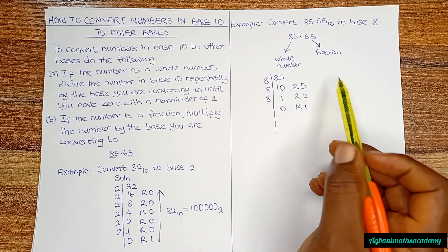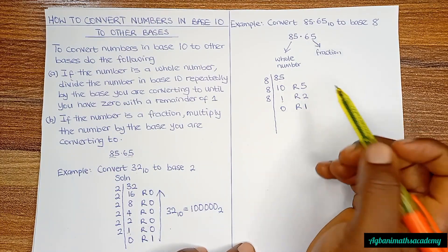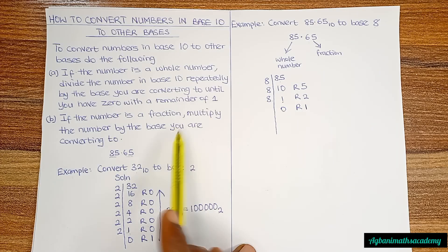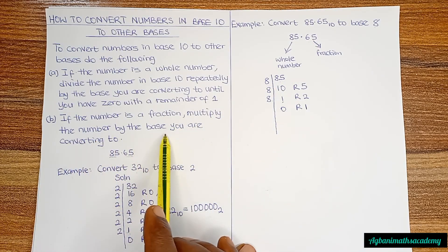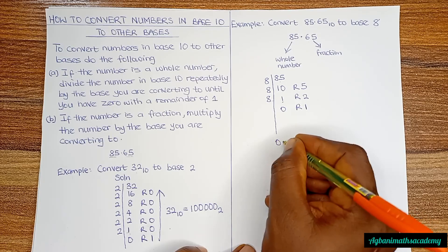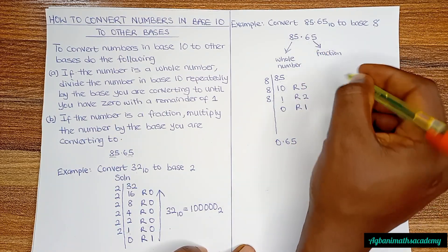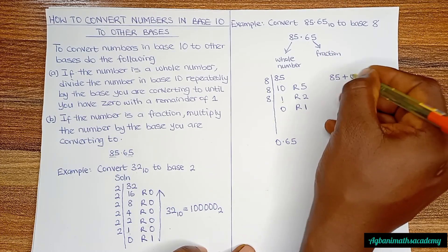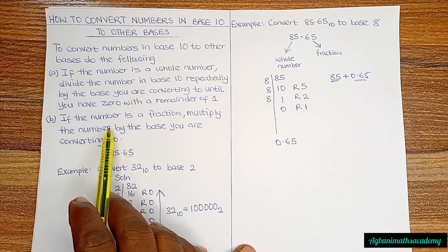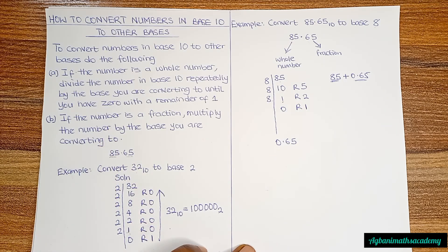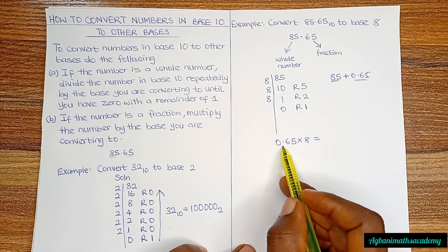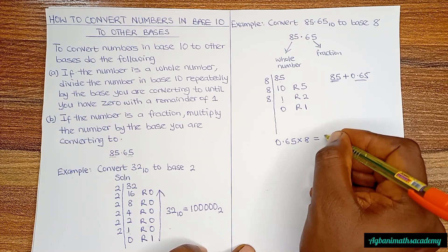Now we convert the decimal fraction 0.65 to base 8. The principle says: if the number is a fraction, multiply by the base you are converting to. Since 85.65 equals 85 plus 0.65, and we have already worked on 85, we now work on 0.65. We multiply 0.65 by 8, which gives us 5.20.